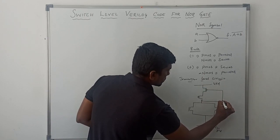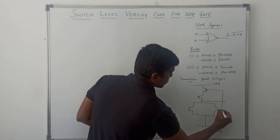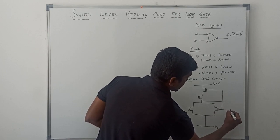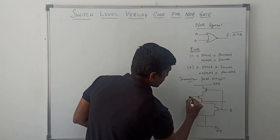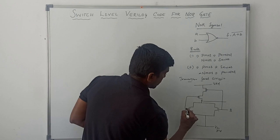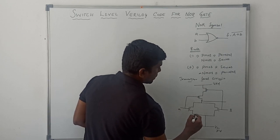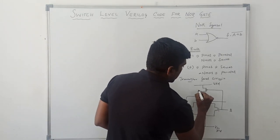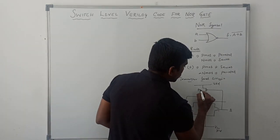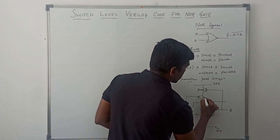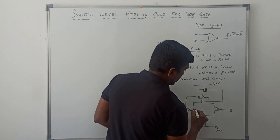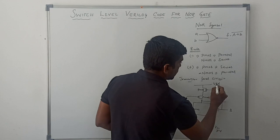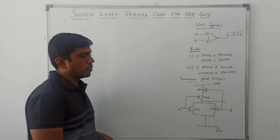These two transistors are connected, and the input of these two transistors is B. Here the input is A. So, this is the basic structure for the NOR gate. These two transistors are called P-MOS, and these two transistors are called N-MOS, with VDD and ground connections.